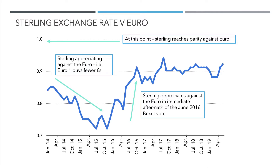Here's sterling against the euro. This is actually the euro-sterling exchange rate, so the chart going down indicates that sterling is going up against the euro — one euro buys fewer pounds. But you can see in June 2016 a significant depreciation of sterling, so that one euro bought more pounds. In fact, the pound has remained fairly weak against the euro ever since. Once you get to one-to-one, that's what you call parity — one euro buys one pound.